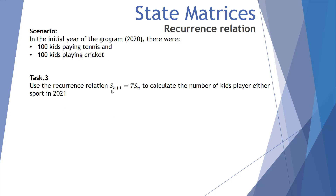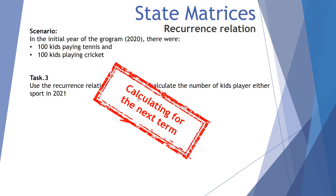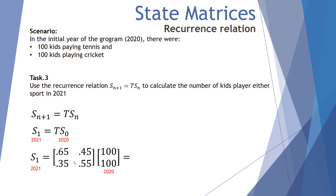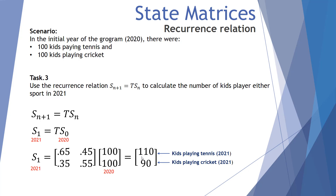Task three: use the recurrence relation S(n+1) = T × S(n) to calculate the number of kids playing either sport in 2021. The next state equals the transition matrix multiplied by the current state. S₀ represents our 2020 data and S₁ is 2021. Multiplying the transition matrix by the initial state matrix, we get 110 kids playing tennis in 2021 and 90 playing cricket — 10 of the cricket players have transitioned to tennis.